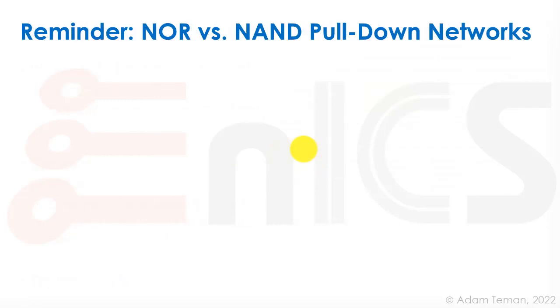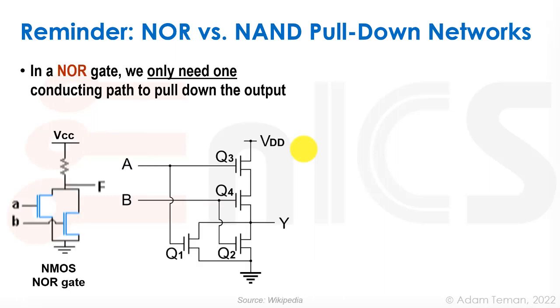Just a reminder, because this is part of our terminology, about NOR versus NAND pull-down networks. In NOR gates, we only need one conducting path to pull down the output. So here's a NOR type of a structure, a CMOS NOR. What we had in our NOR is in the pull-down network, these parallel transistors that were enabling us the pull-down path that could take the output and pull it down to ground. So we always had only one transistor, either A or B in this case, could pull down our output. And that enables us to have a really fast readout because there's not a lot of resistance on the pull-down path.